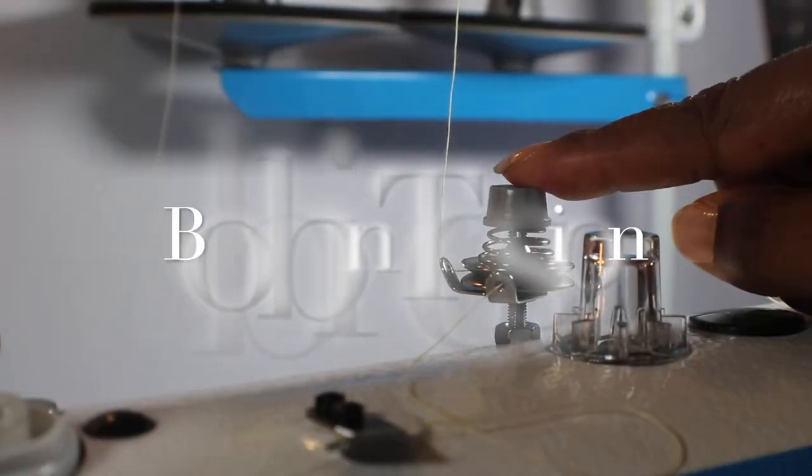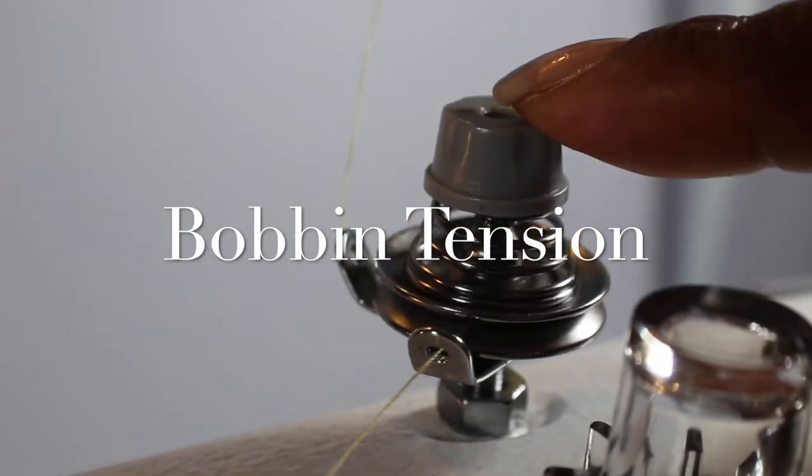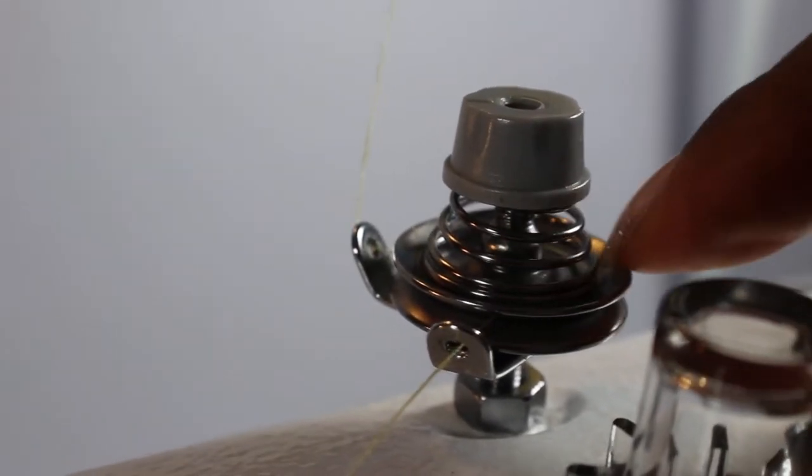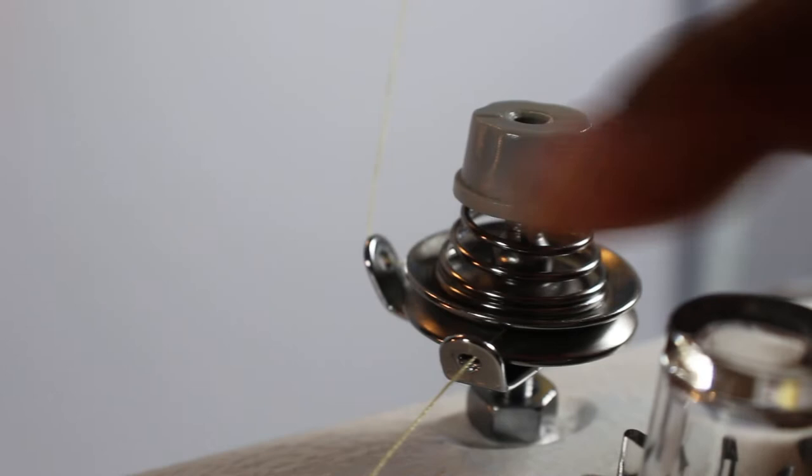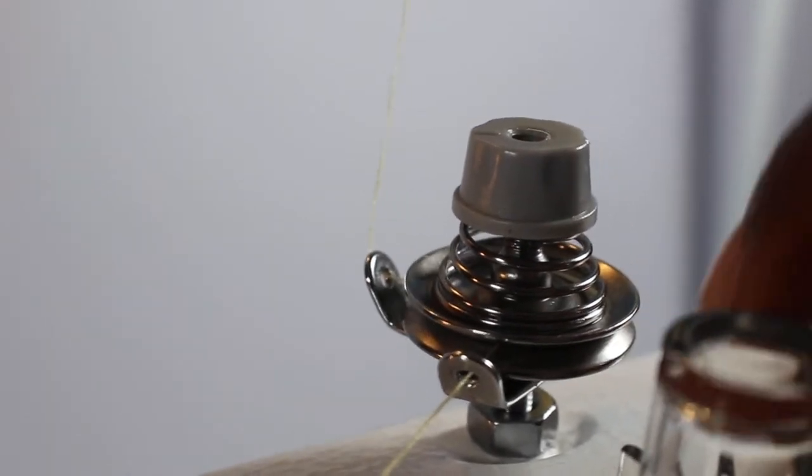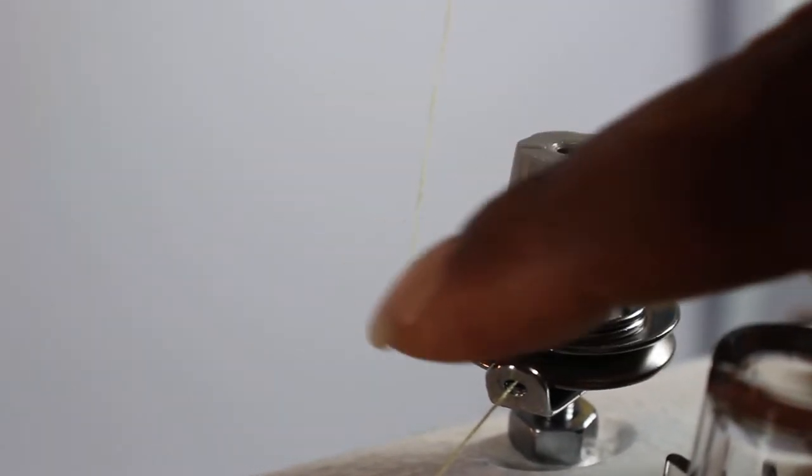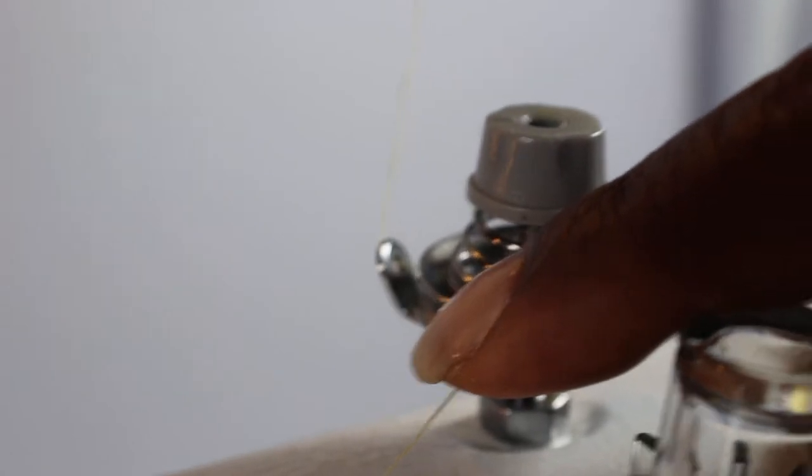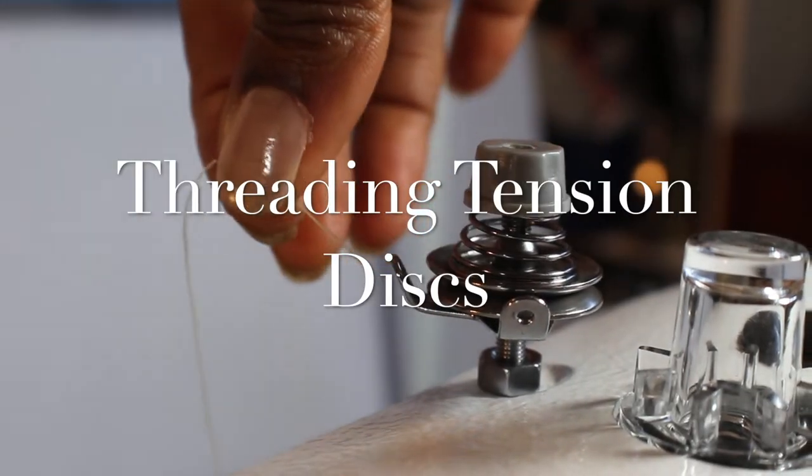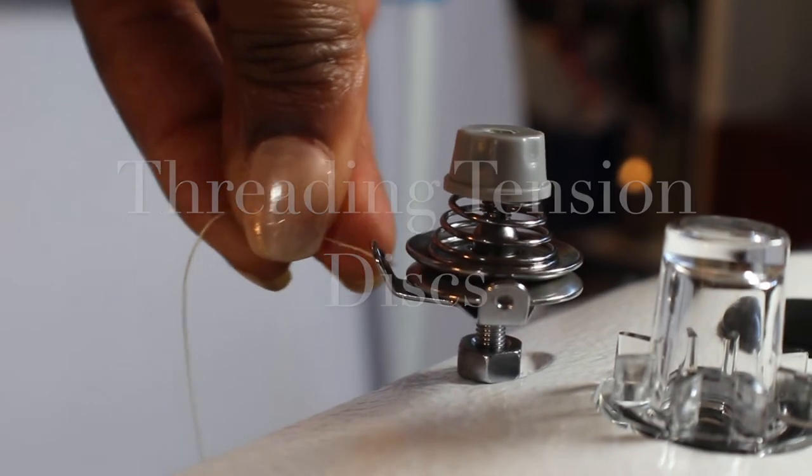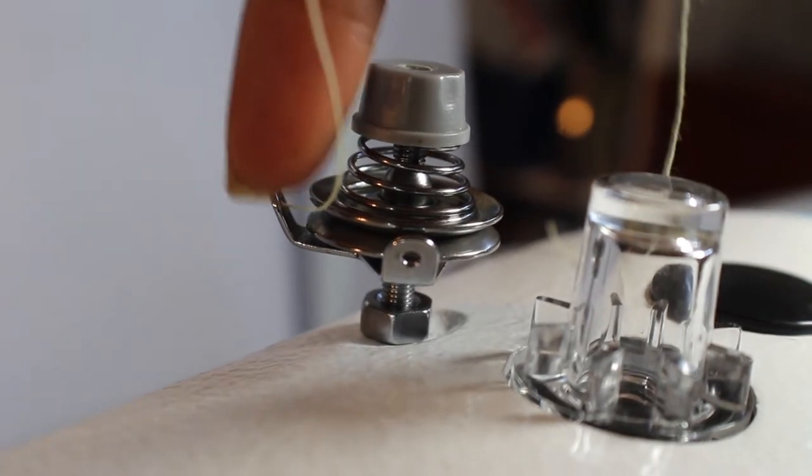When you receive your machine, I always recommend before you do anything, look and see what is there. On this machine there's two holes plus the tension disc. I've seen people miss the tension disc and put the thread the wrong way. To thread your bobbin, you're going to put your thread first through this hole here.